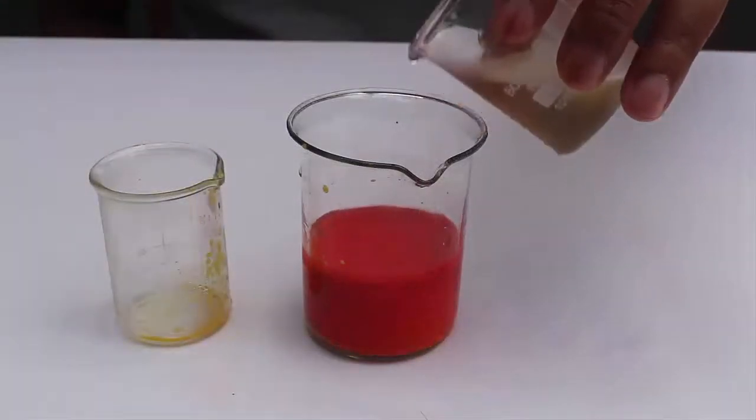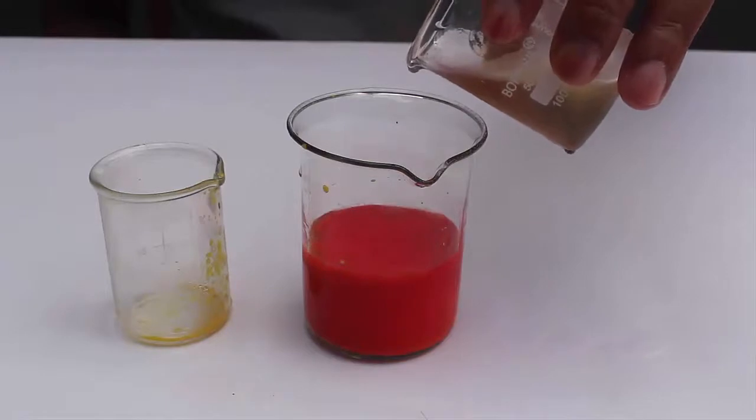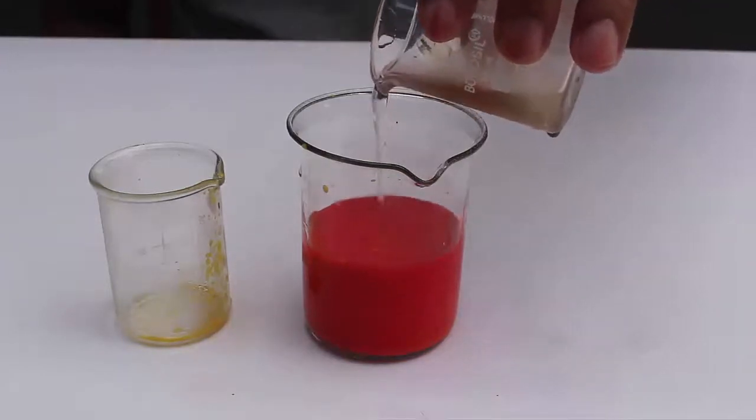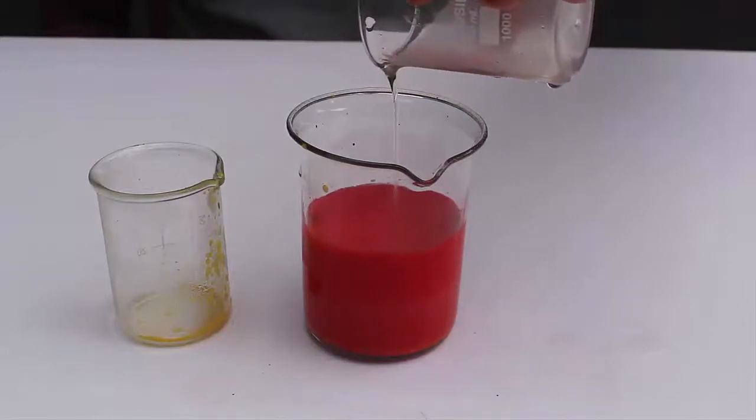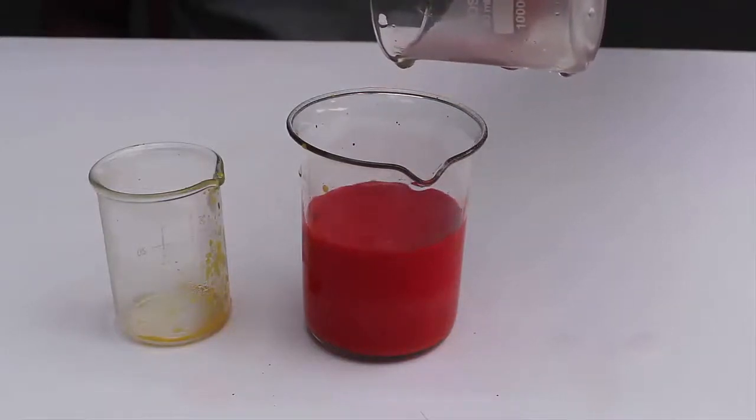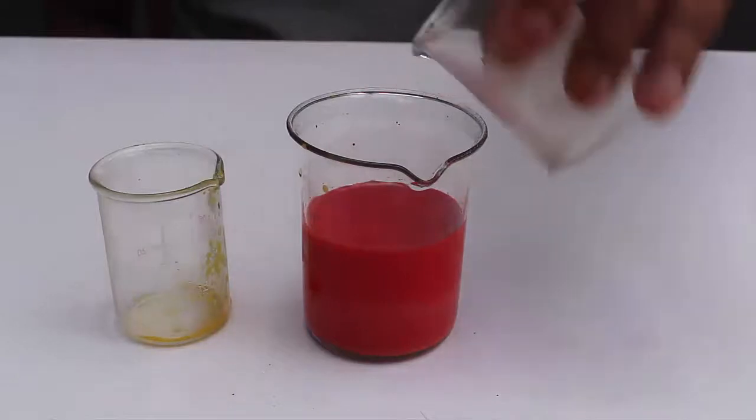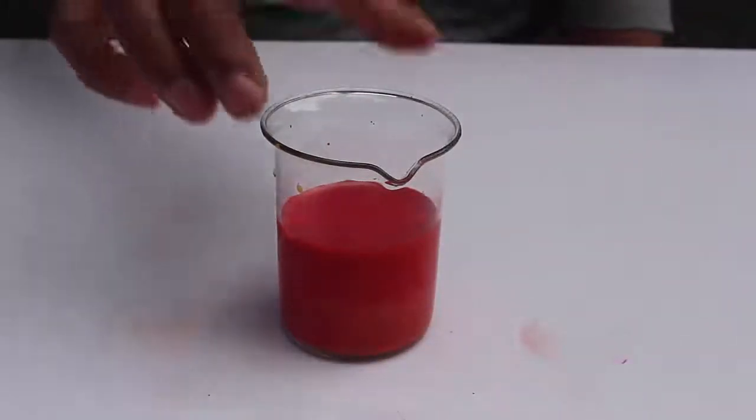A dye, a colorful dye is being created. This is the azo dye, A-Z-O. The azo dye is formed when aniline reacts with beta naphthol.